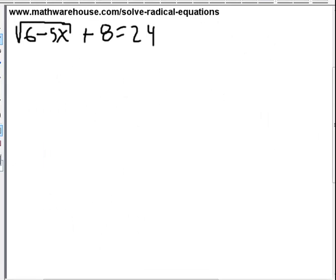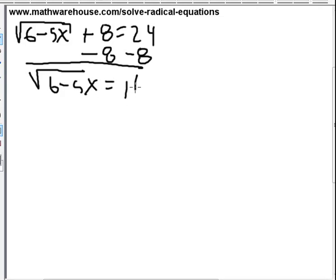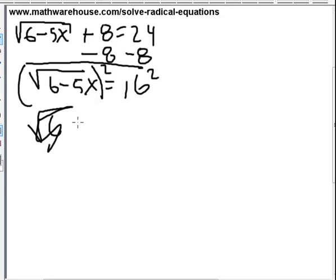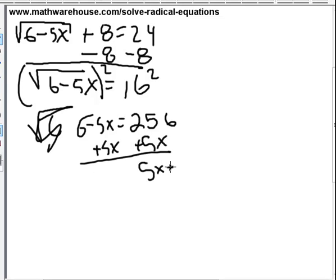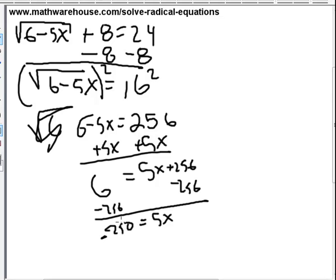So let's approach this problem. The square root of 6 minus 5x plus 8 equals 24. Remember, our first goal is to isolate the radical. So, let's do that by subtracting 8 from both sides. And getting this. Now, let's square both sides. And you end up with 6 minus 5x equals 16 squared, or 256. And now, just solve for x. So, let's add 5x to both sides. You get 5x plus 256 equals 6. And subtract 256 from both sides. You get 5x equals negative 250. And then just divide both sides by 5 to get the answer of x equals negative 50.